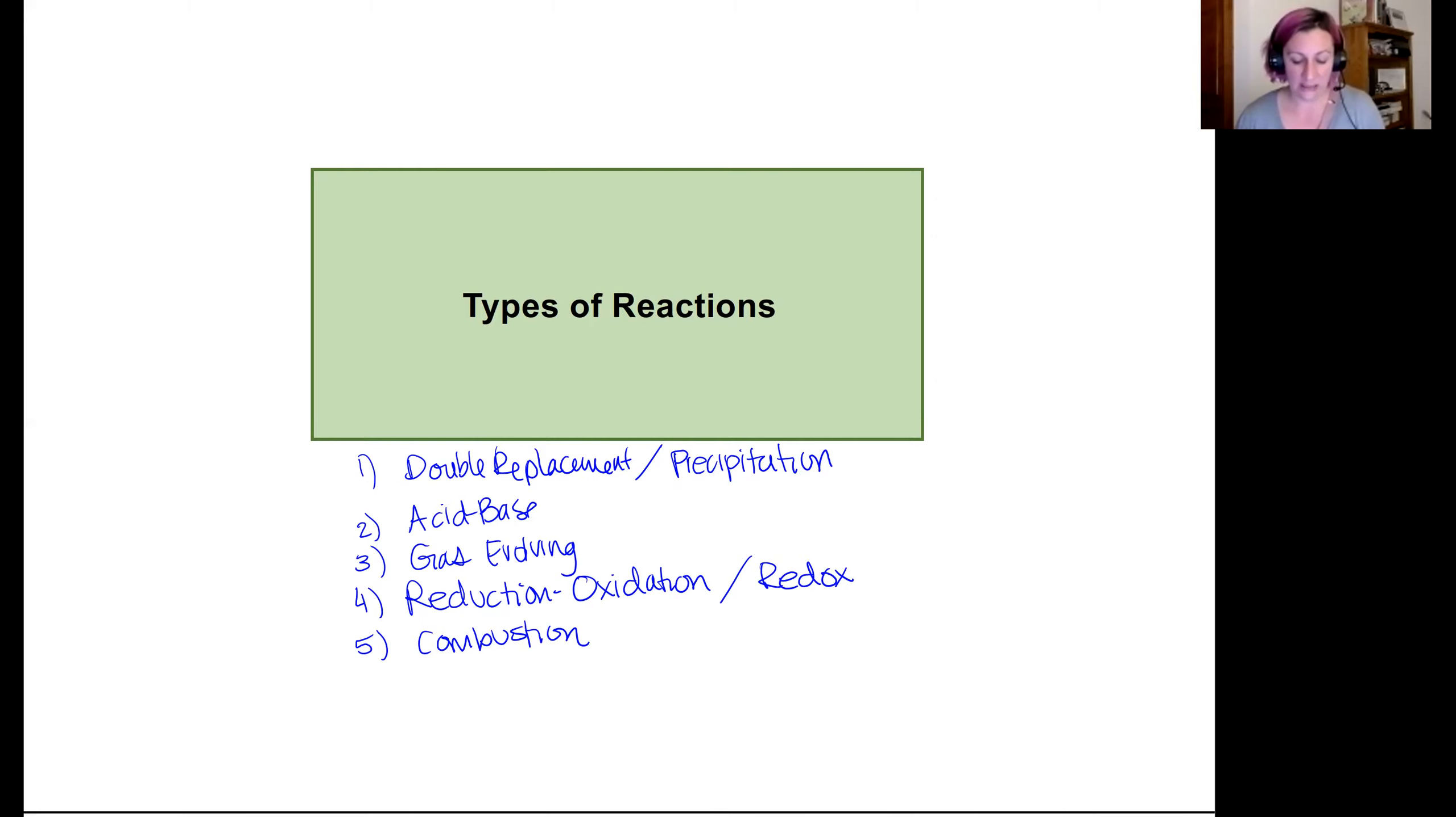The ones that are going to be a little bit more in depth later on will be acid-base reactions. We'll spend a lot of time in Chemistry 162 talking about acid-base reactions. We'll also go into a lot more detail with redox reactions when we learn about electrochemistry. So let's start. We're going to talk about double-replacement reactions, or they're also called precipitation reactions, then acid-base, then gas-evolving reactions, then oxidation-reduction reactions, and lastly, combustion.